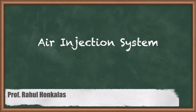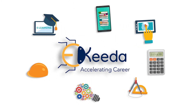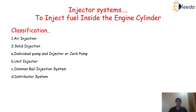Today we are going to understand one of the very important injection systems, and that is the air injection system. In the last few videos, we already started to discuss about the different things in the injection system. In the case of CI engines, the injector system is one of the important things. We already discussed the different requirements of a good injection system and the different functional elements of an injector system. Now today we are going to understand the air injection system, so first we must understand the classification or types of the injection system.